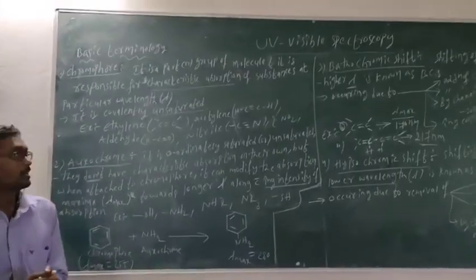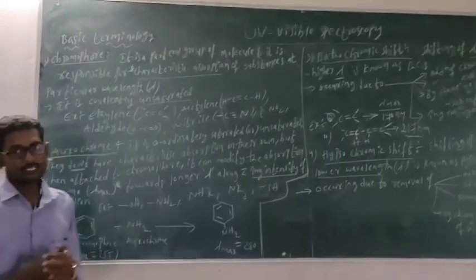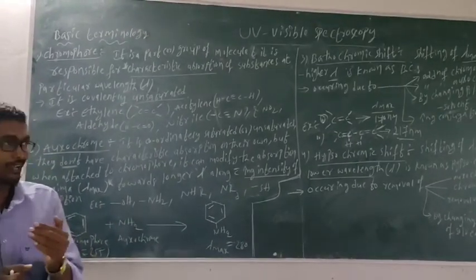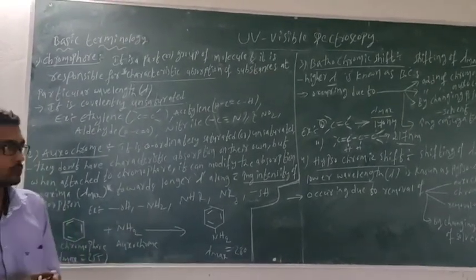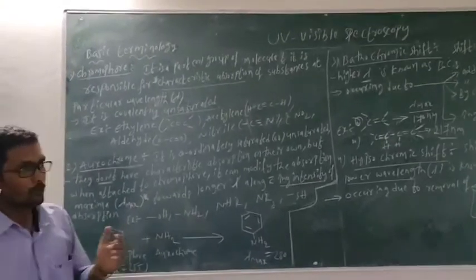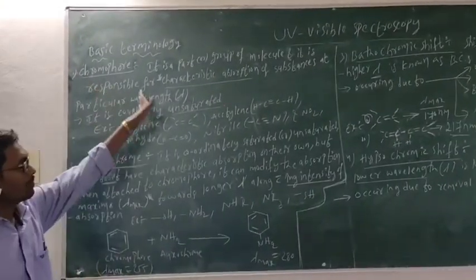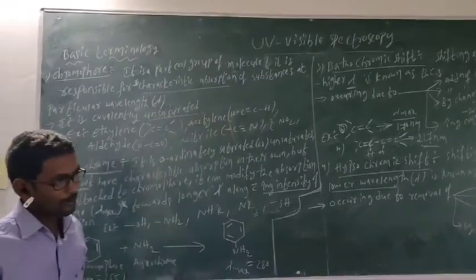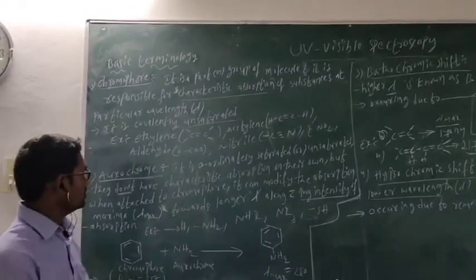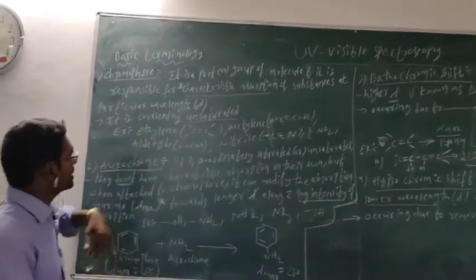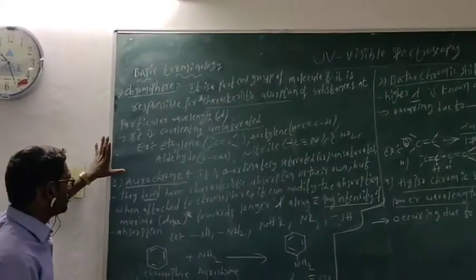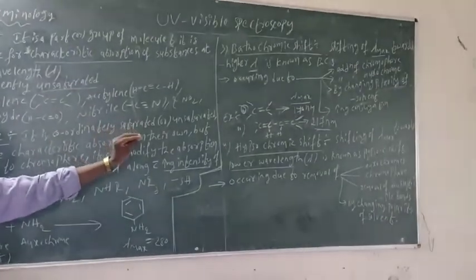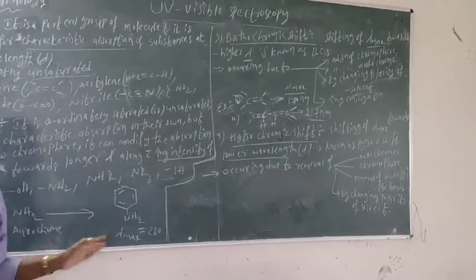Good morning. In my last class I explained the types of electron transition in UV-Vis spectroscopy. In this class I am going to explain basic terminology used in UV-Vis spectroscopy. These are very important from a general point of view also. In this class I am going to explain six terms: chromophore, auxochrome, bathochromic shift, hypsochromic shift, hyperchromic shift, and hypochromic shift. Let's see one by one.